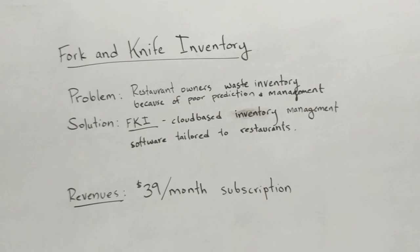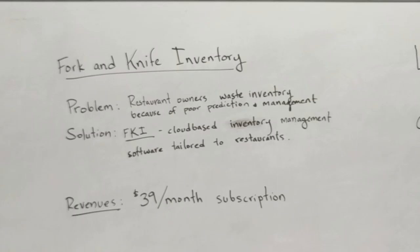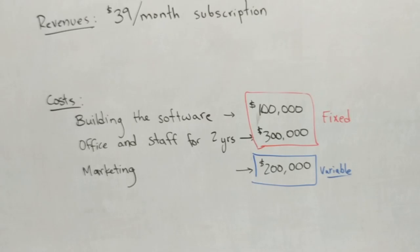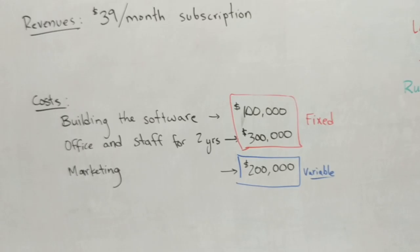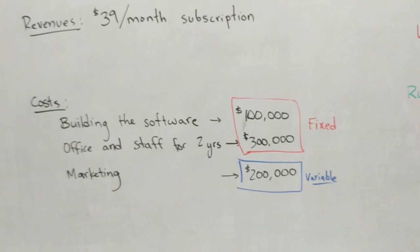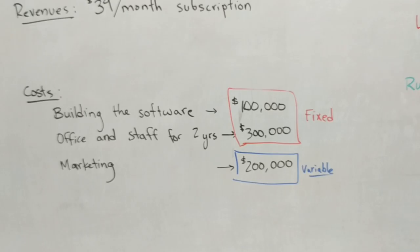They've set their price at $39 a month, so that's their revenue for each customer. Then they've got some costs to think about. They've got to actually build out the software — I said that's going to cost $100,000. They might have an office and staff for two years; let's say over two years that's going to cost $300,000. And then there are some marketing expenses. What you'll notice is that building the software and the office and staff are fixed costs.